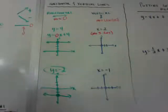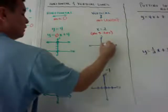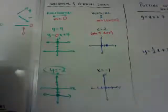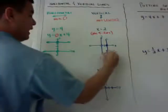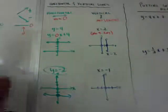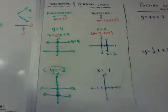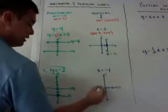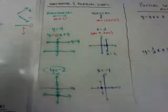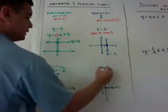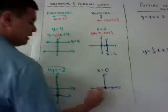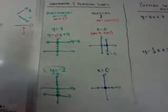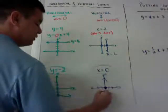For x equals negative 2, there's no y in the equation, so there's no y intercept. Just graph the dot at x equals negative 2, and you can see it's going to be a vertical line going that way. If you ended up with x equals 0, graph it on the dot — but if x is 0, it's a vertical line and you just draw it on the y-axis itself.